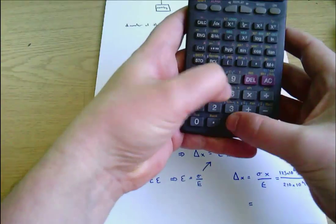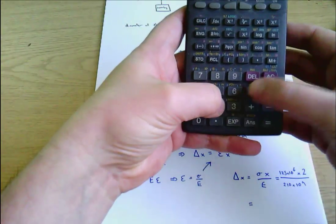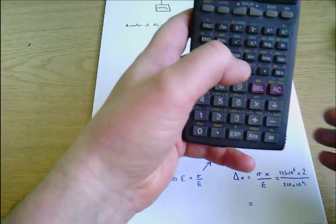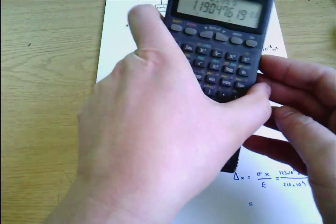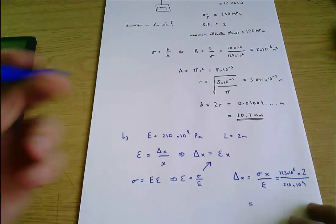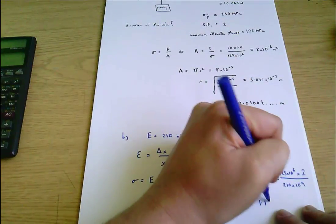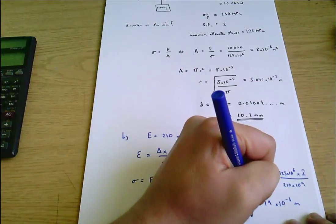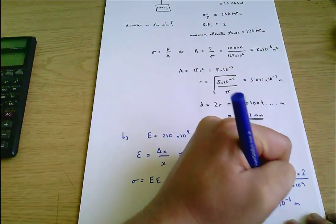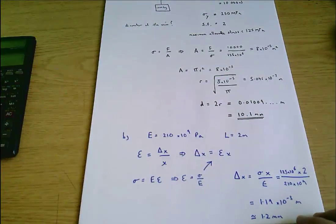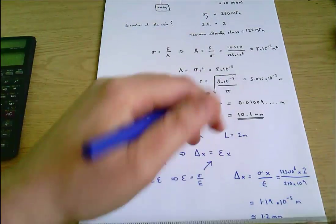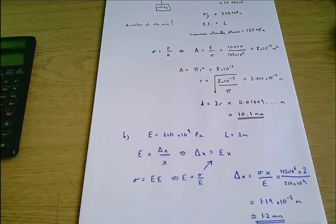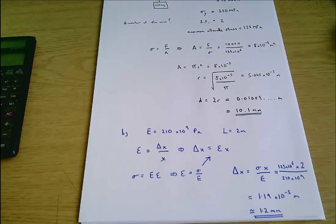So 1.25 times 10 to the 6 times 2 divided by 2 times 10 to the 9 is 1.19 times 10 to the minus 3 meters, which is about 1.2 millimeters. Either of those will do fine as an answer there. And so that is the final answer to part B.